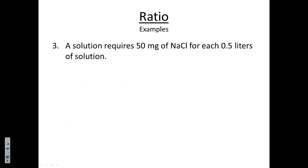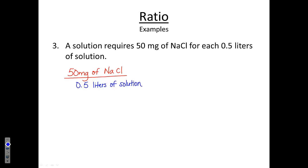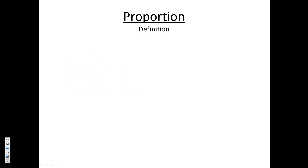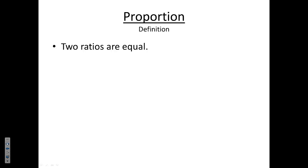One more example: a solution requires 50 milligrams of sodium chloride for each 0.5 liters of solution. We can easily set up a ratio comparing sodium chloride to solution: 50 milligrams of sodium chloride for every 0.5 liters of solution. So a ratio is nothing more than comparing two different quantities, and that leads us right into a proportion, which you'll be using a lot. A proportion is nothing more than when two ratios are set equal to each other.